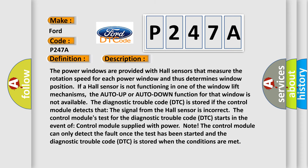The power windows are provided with Hall sensors that measure the rotation speed for each power window and thus determine window position. If a Hall sensor is not functioning in one of the window lift mechanisms, the auto-up or auto-down function for that window is not available.